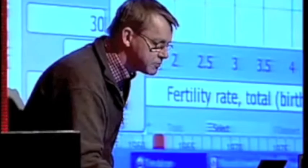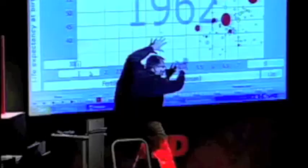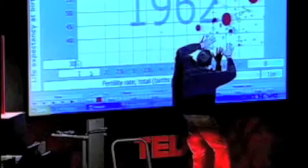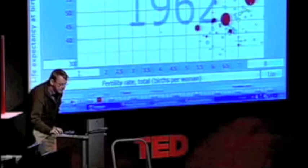what has happened since 1962? We want to see the change. Are the students right? Is it still two types of countries? Or have these developing countries got smaller families and they live here? Or have they got longer lives and live up there? Let's see. We stopped the world. And this is all UN statistics that has been available. Here we go.